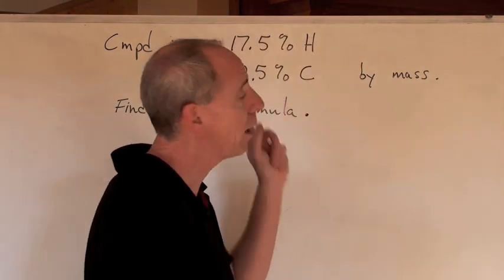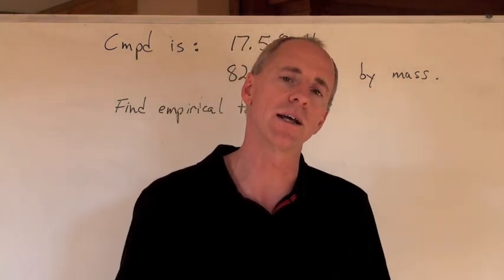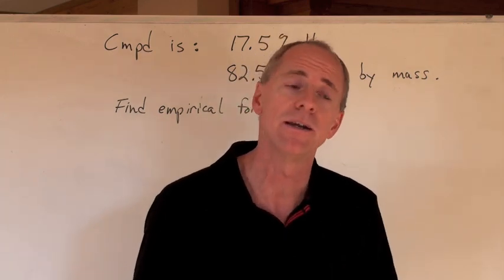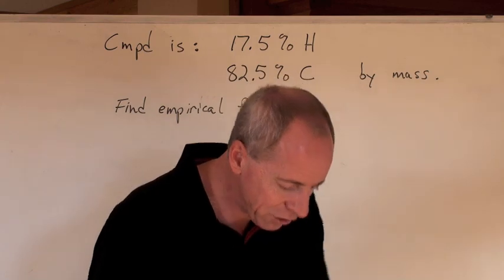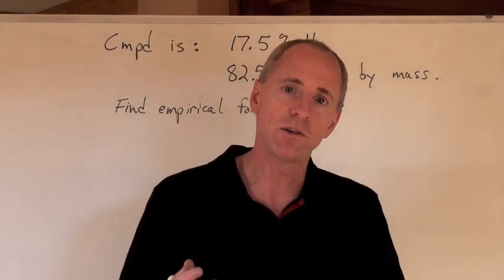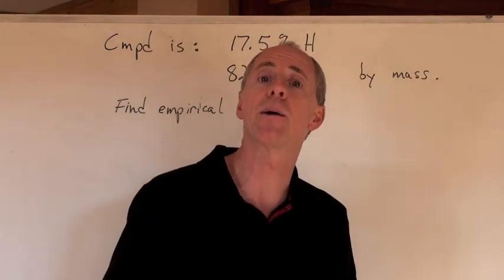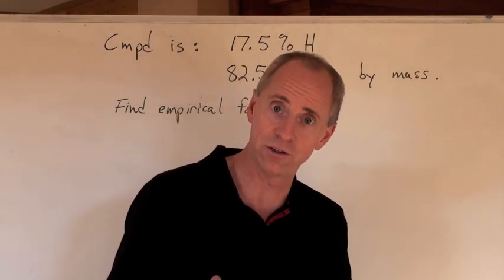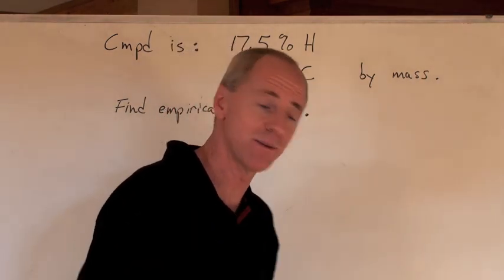This information can help us to find the empirical formula, and then if we're given one more bit of information afterwards, we can find the molecular formula. But how do you do it? You've got the percentages, you've got to work backwards. Here's the first step. The first thing you do is take these percentages and treat them like they are masses. When you see percent, they're mass. Turn the percents to mass.